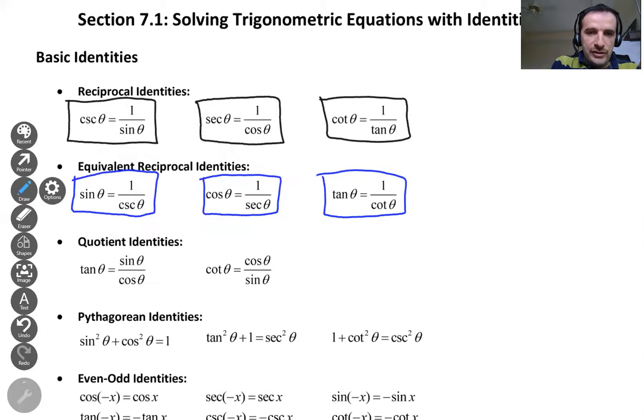And what are the quotient identities? Tangent is equal to sine over cosine. Cotangent is equal to cosine over sine. These are all coming from the definitions, as you may remember.